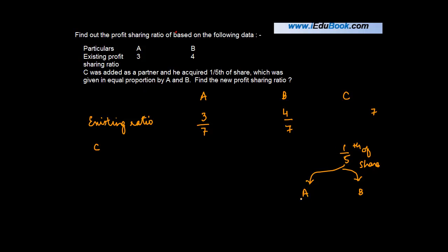Now you are told that out of this 1/5, they gave it equally. So A gave how much? One half of 1/5, which is the sacrifice ratio of 1/10.